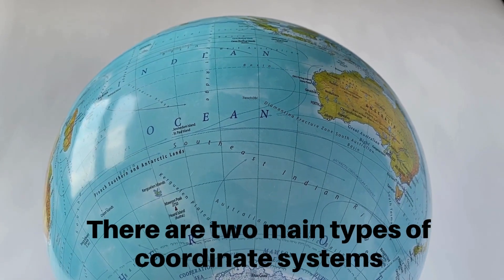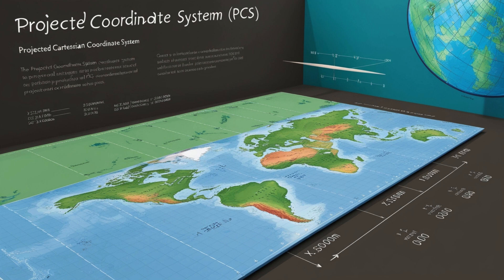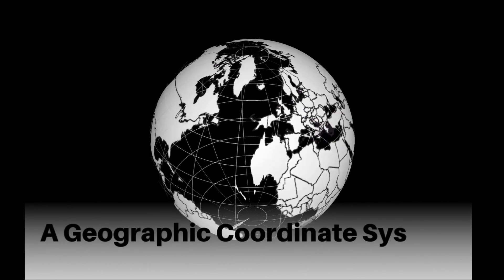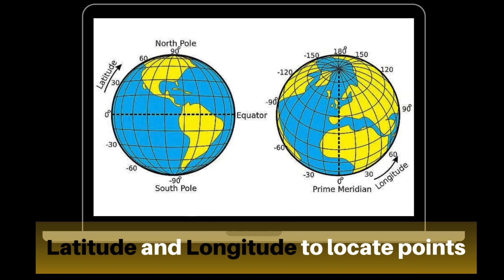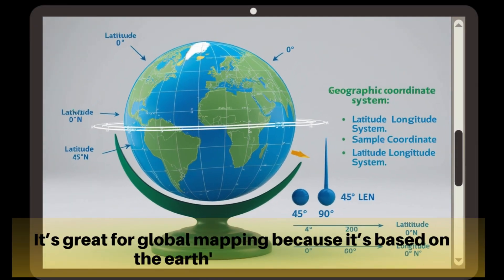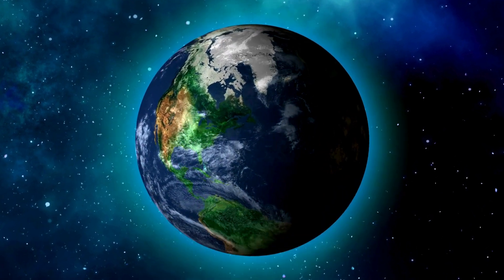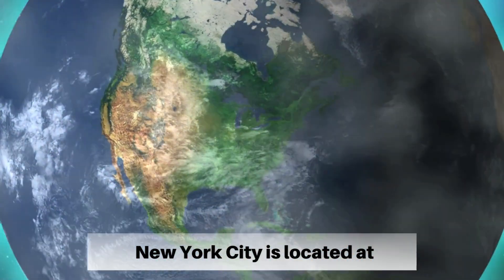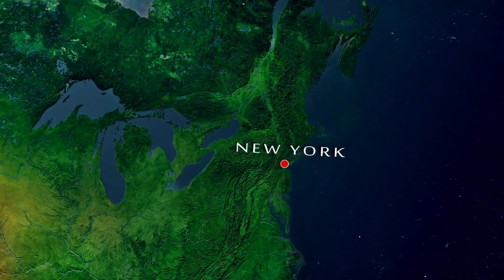There are two main types of coordinate systems: Geographic Coordinate Systems, or GCS, and Projected Coordinate Systems, or PCS. A geographic coordinate system uses latitude and longitude to locate points. It's great for global mapping because it's based on the Earth's curved surface. For example, New York City is located at about 40.7128 degrees north, 74.0060 degrees west.